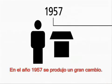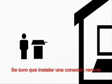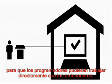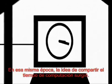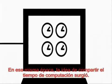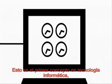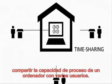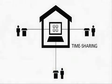The year 1957 marked a big change. A remote connection had to be installed so that the developers could work directly on the computers. At the same time, the idea of time-sharing came up. This is the first concept in computer technology to share the processing power of one computer with multiple users.